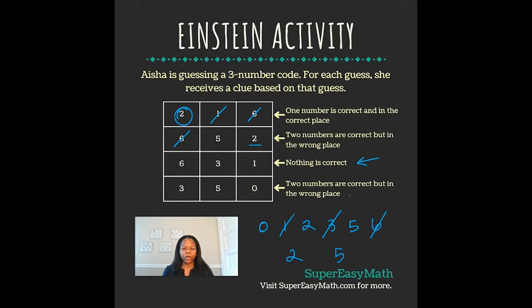Then if we go back to the fourth clue, it says two numbers are correct but in the wrong place. Again, the three would not be utilized, and the two correct numbers would be the five and the zero, but they're both in the wrong place. So that means it would be zero, five for our last two digits. So our three-digit code is 205.